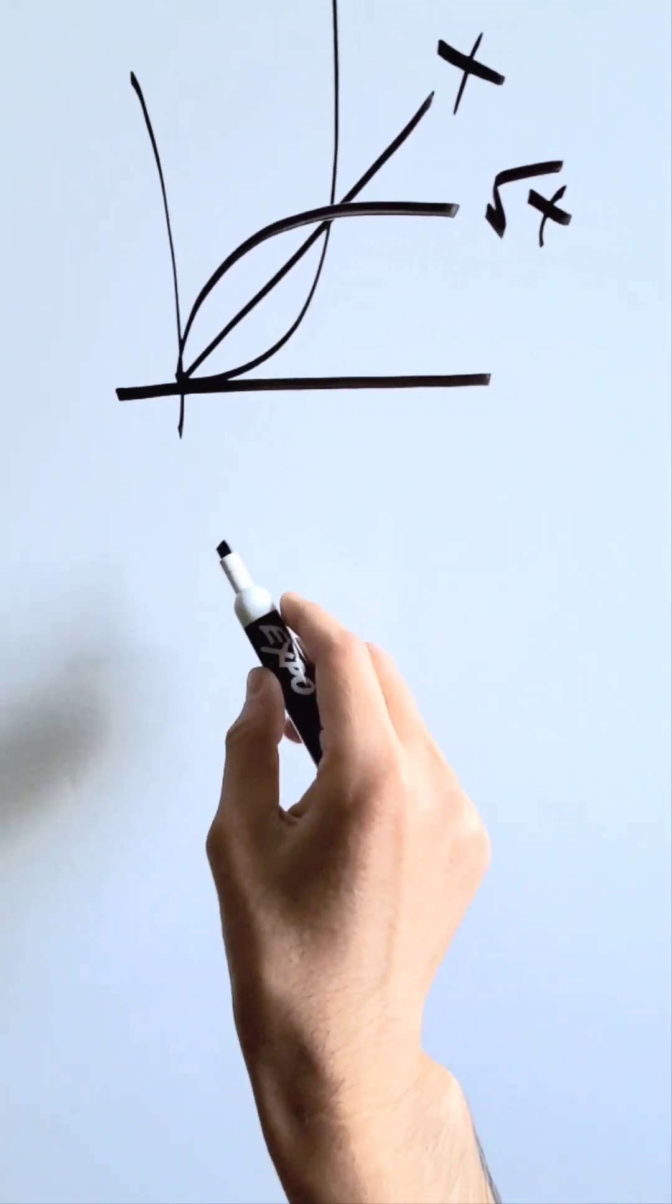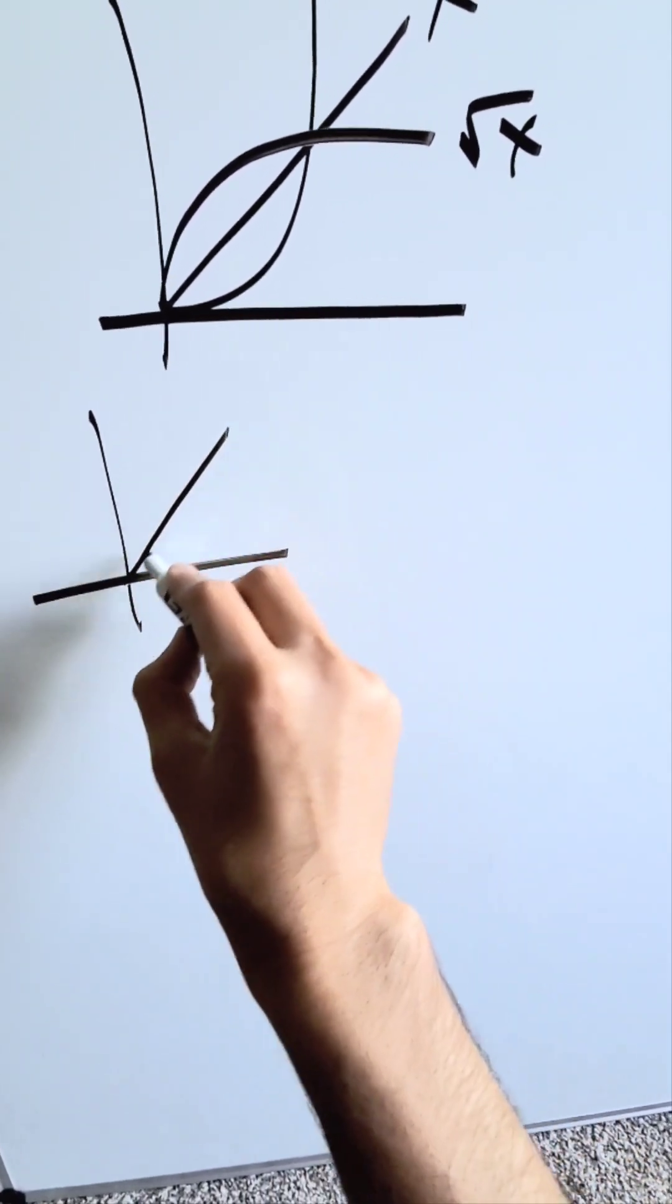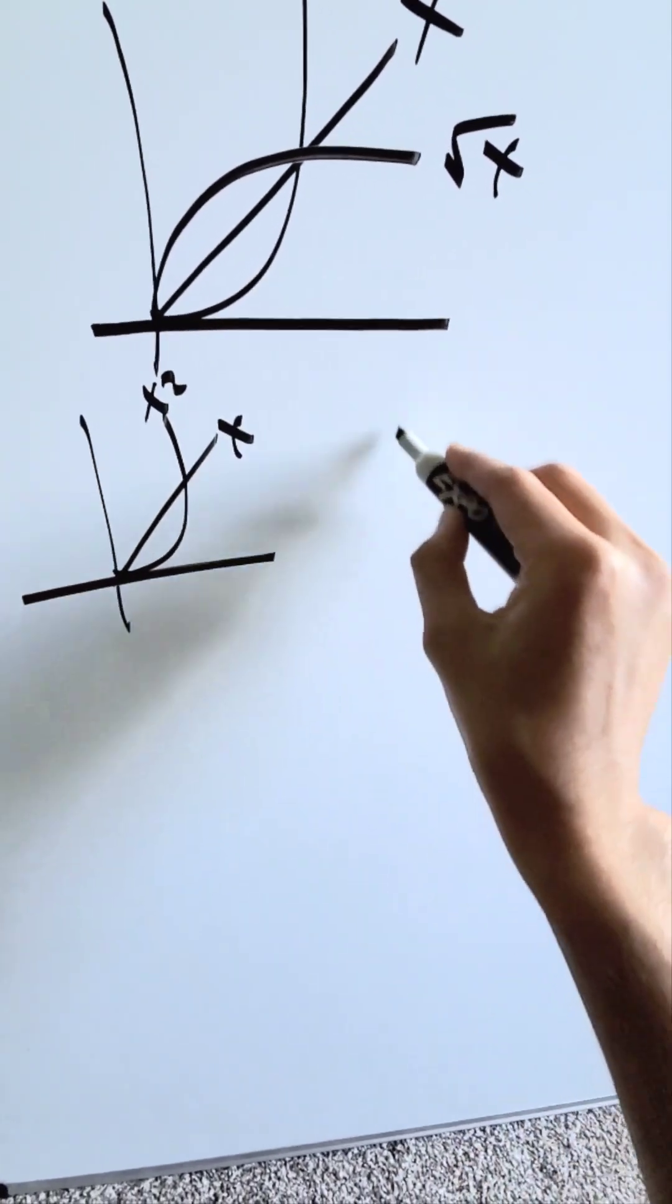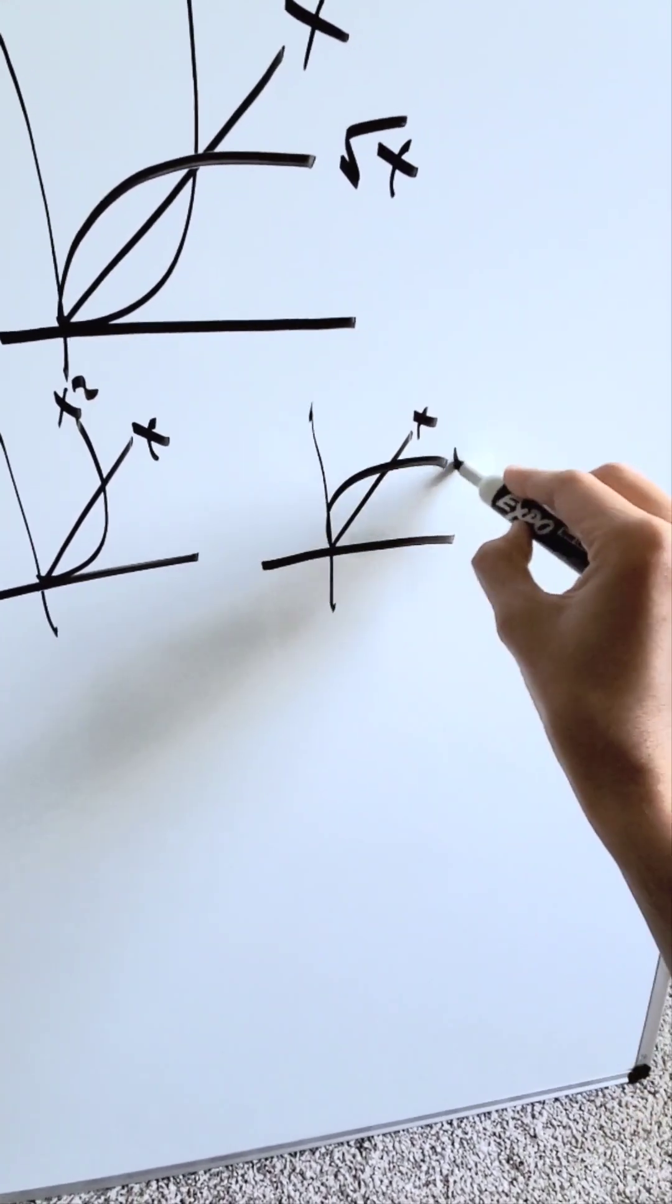If you were to look at these individually in terms of pairs, what do I have? I have y equals x and x squared. Here's x squared and here's x. And looking at another representation, I have x and root x.